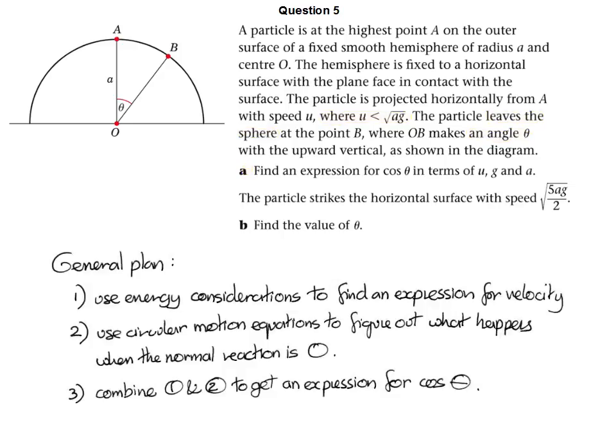If we consider the energy just after it's been pushed, and then the energy after it's been rotated by an angle theta, we should be able to get an expression that tells us the new velocity of the object. If we think about it, we can see that it's going to leave the sphere when the normal reaction between the sphere and the particle becomes zero. So if we consider circular motion, and we set the normal reaction equal to zero, that should tell us something about when it leaves the sphere. And hopefully, we'll be able to combine the first two of those to get an expression for the point at which it leaves the sphere in terms of the variables we've been given.